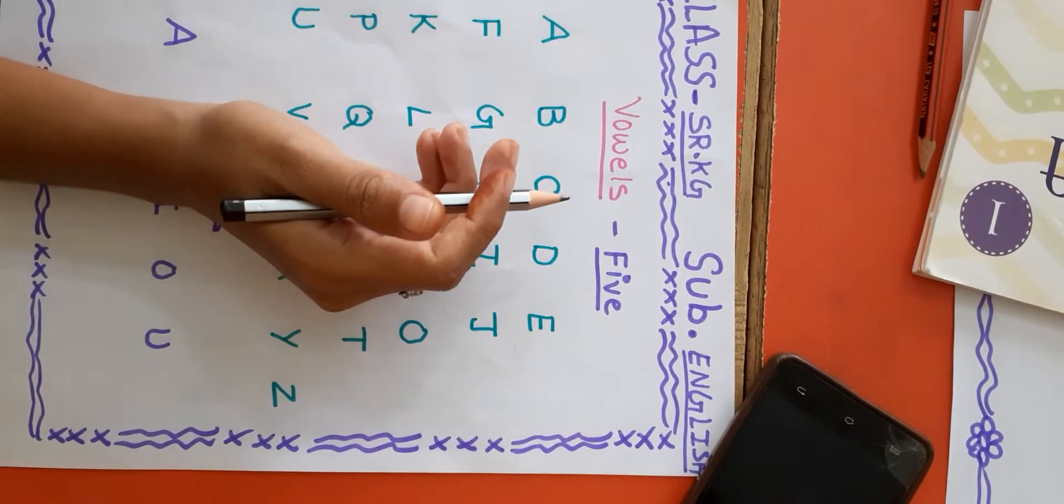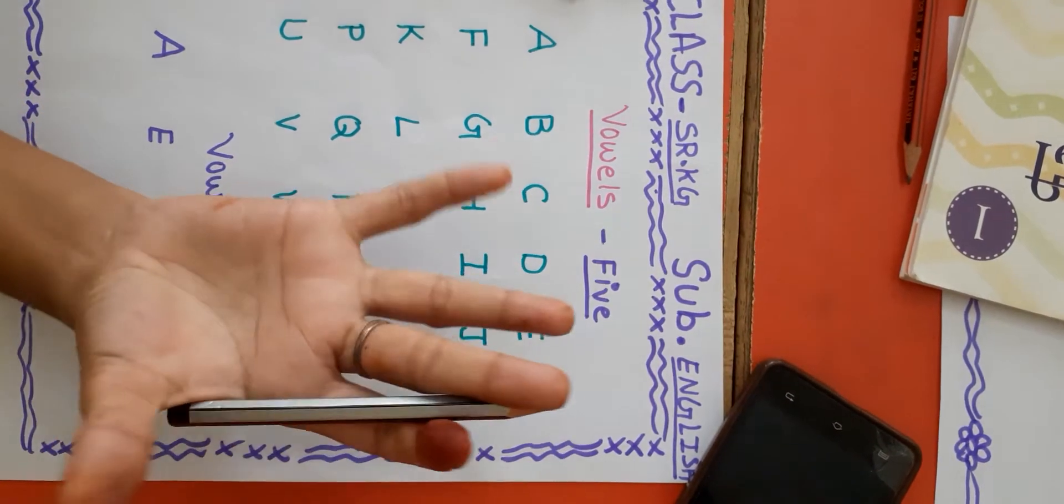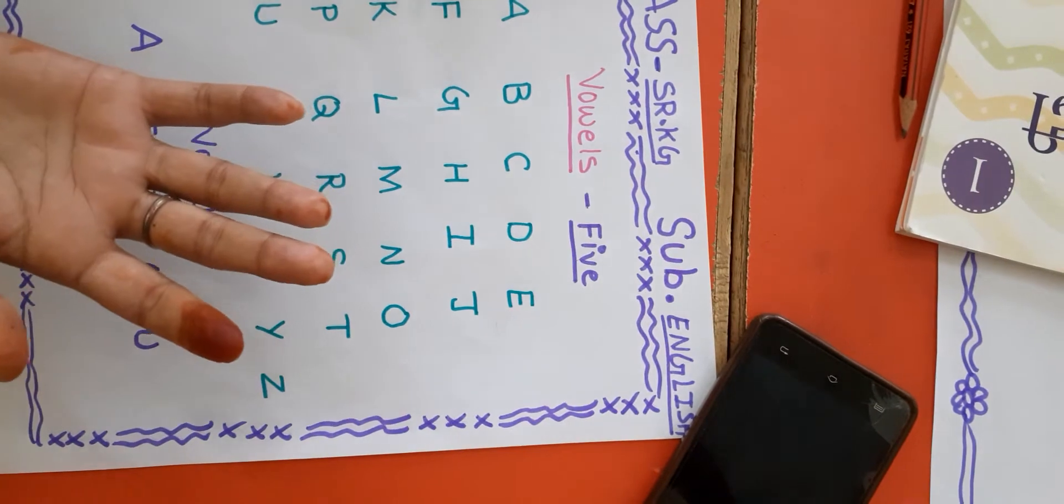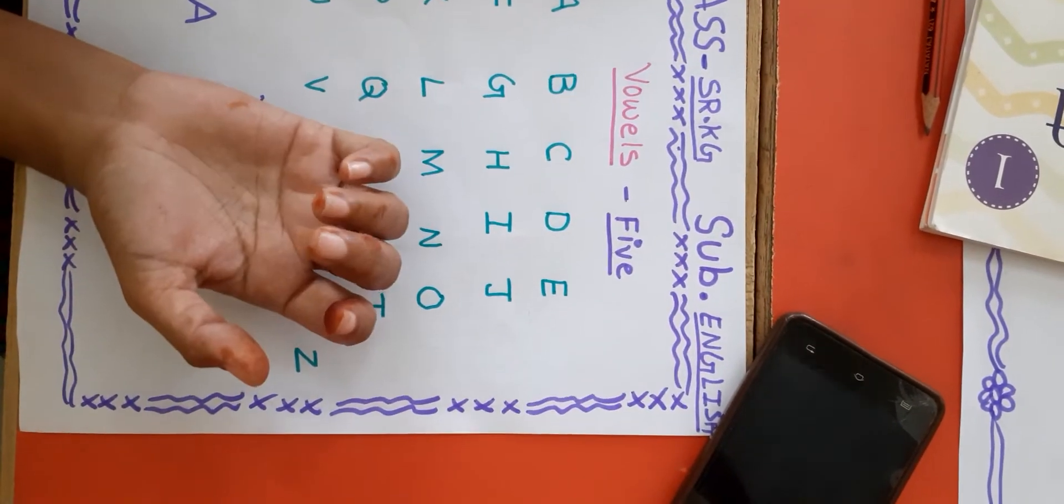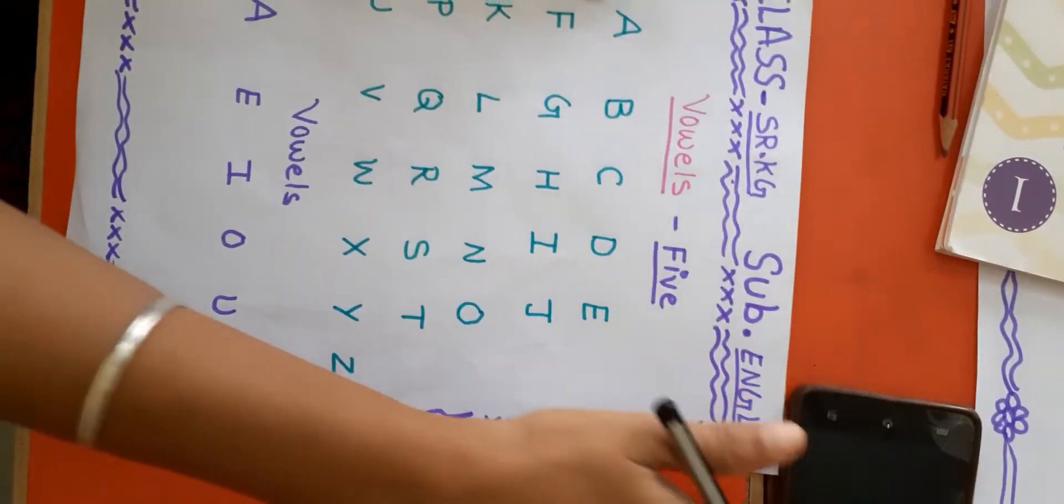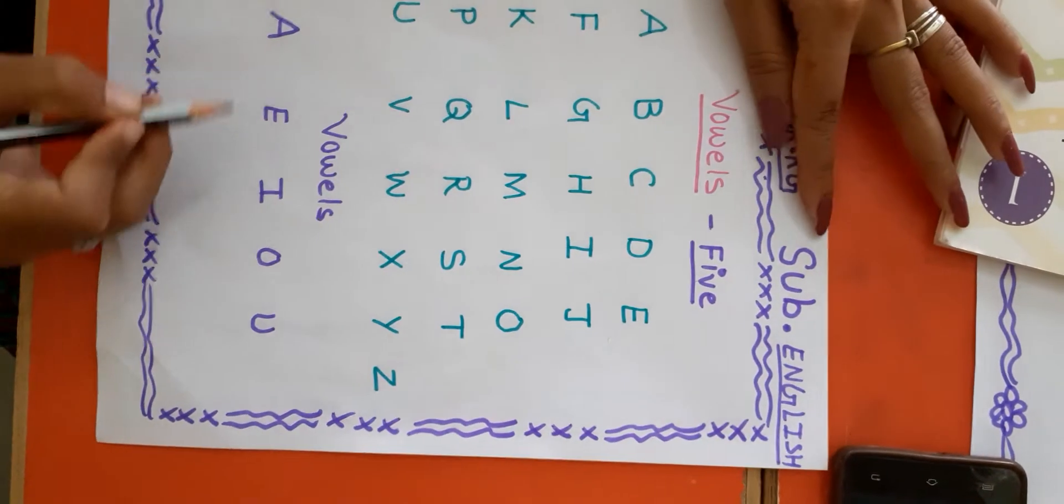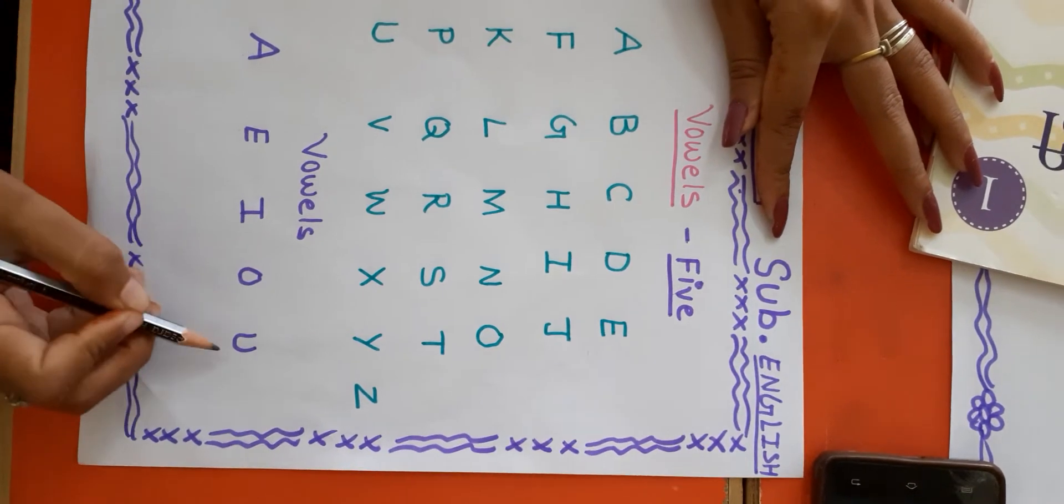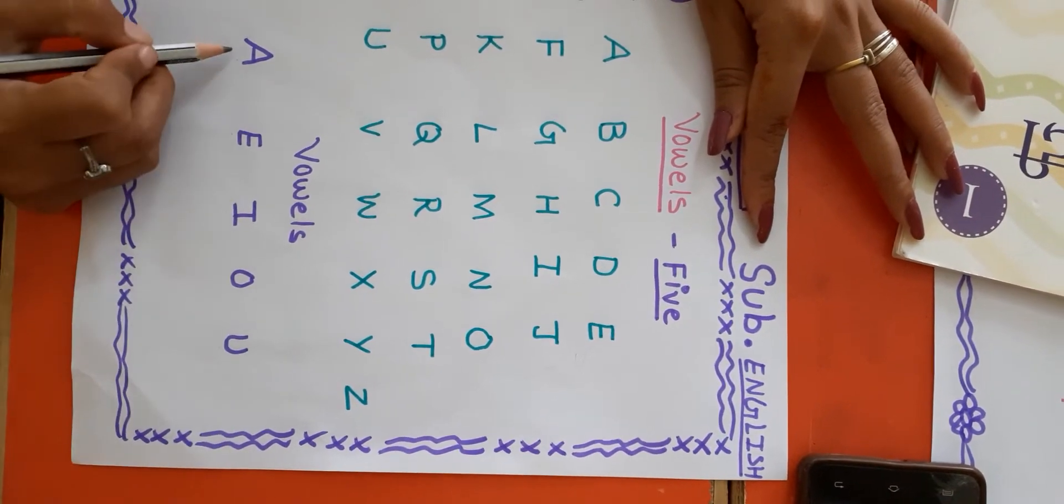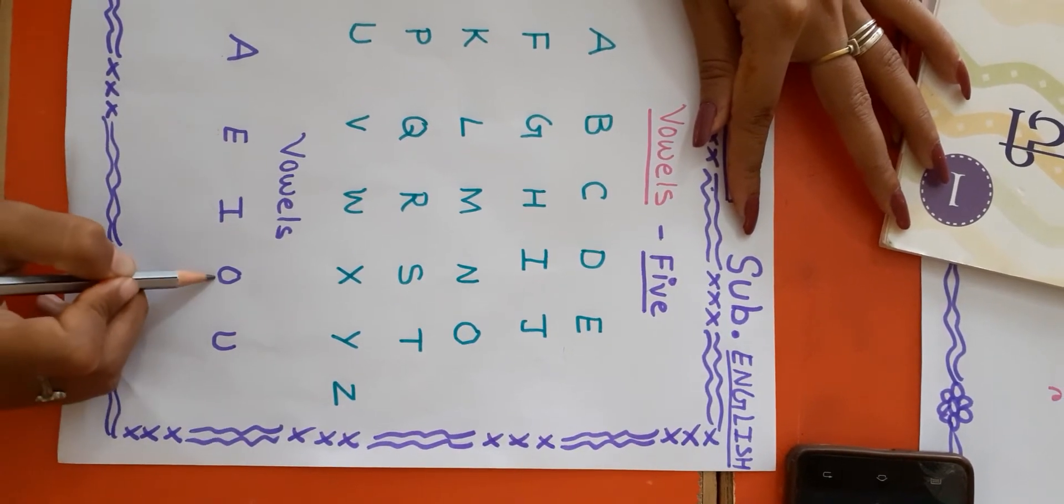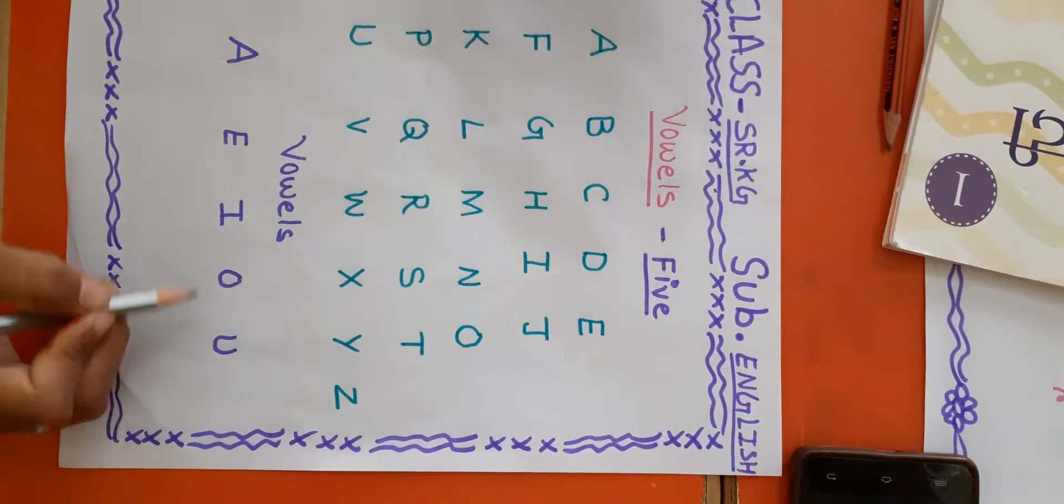How many vowels? Five. Today we are going to learn vowels. Five vowels. A E I O U, A E I O U, five vowels.